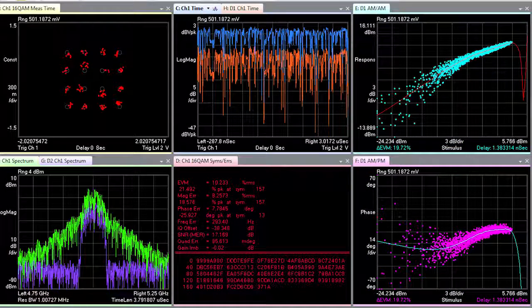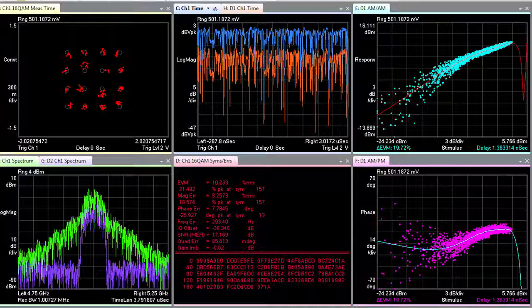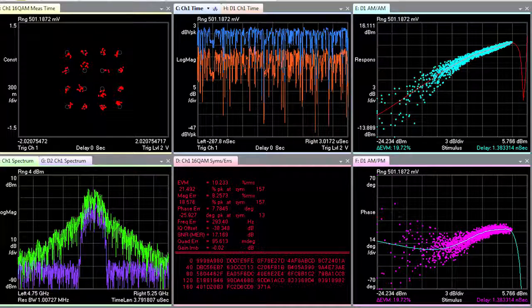Having an understanding of an amplifier's AMAM and AMPM characteristics is important because it directly translates into errors in the data recovered from a modulated signal.